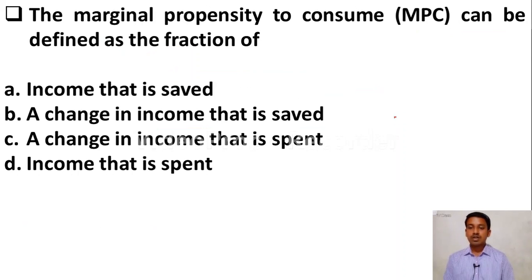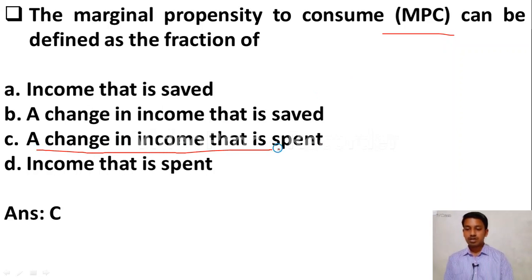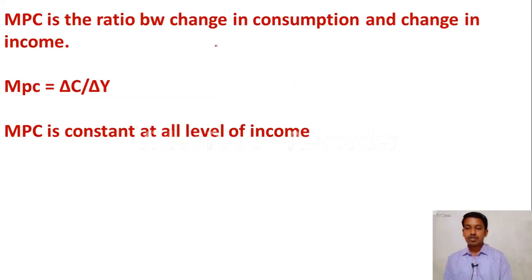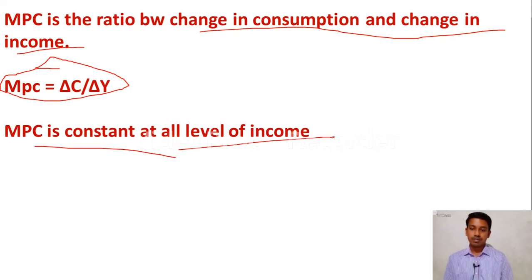The marginal propensity to consume can be defined as the fraction of: Option A — income that is saved. Option B — a change in income that is saved. Option C — a change in income that is spent. Option D — income that is spent. The right answer is Option C, a change in income that is spent. MPC is the ratio between change in consumption and change in income: MPC = ΔC / ΔY. Please remember MPC is constant at all levels of income.